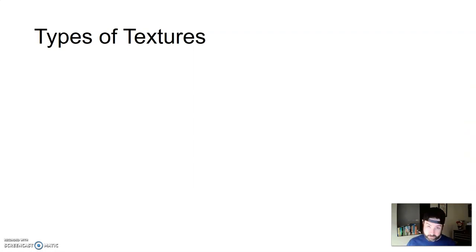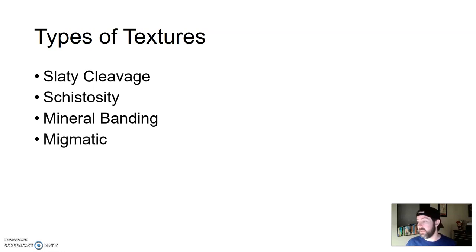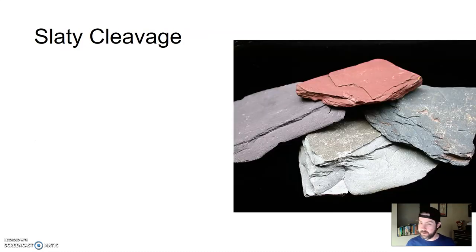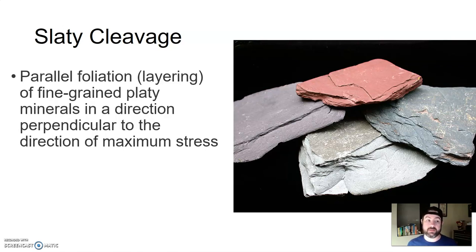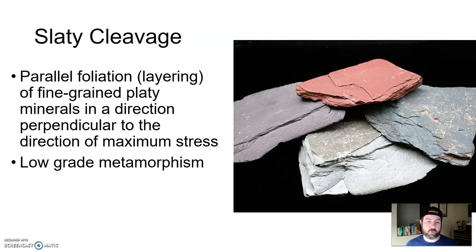When we're looking at foliation, there are different types of foliated textures, and those include slaty cleavage, schistosity, mineral banding, and migmatic textures. Slaty cleavage is kind of hard to pick out — sedimentary rocks can sometimes take on this look as well. Slaty cleavage is the parallel foliation or layering of very fine-grained platy minerals in a direction perpendicular to the direction of maximum stress. This is a very low-grade metamorphism.